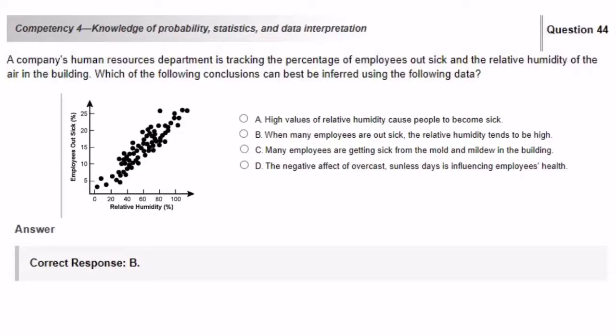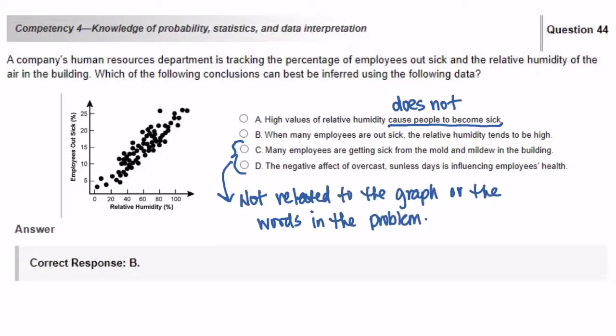For answer choice A, high values of relative humidity cause people to become sick. It does not cause them to become sick. It says that employees are out sick. Let's look at answer choices C and D. Many employees are getting sick from the mold and mildew in the building, and the negative effect of overcast sunless days is influencing employees' health. We can eliminate these answer choices because it's not related to the graph or the words in our scenario.